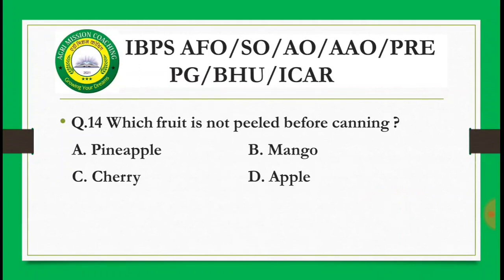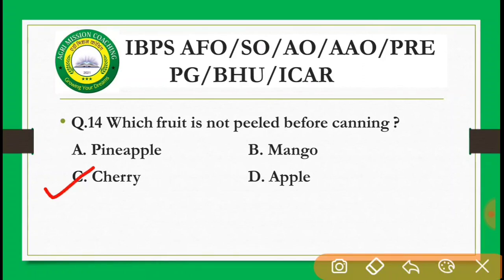Next question: Which fruit is not peeled before canning? Options are: pineapple, mango, cherry, apple. The correct answer is cherry — cherry is not peeled before canning. All others — pineapple, mango, and apple — are peeled before canning.